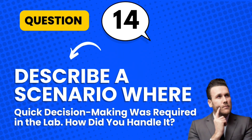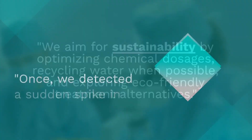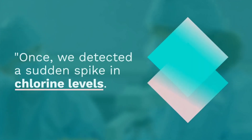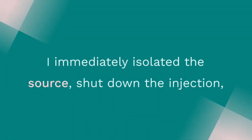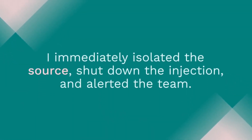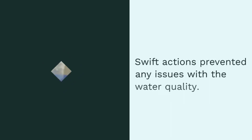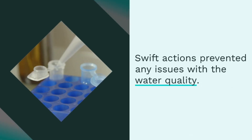Question 14: Describe a scenario where quick decision-making was required in the lab. How did you handle it? Once, we detected a sudden spike in chlorine levels. I immediately isolated the source, shut down the injection, and alerted the team. Swift actions prevented any issues with the water quality.